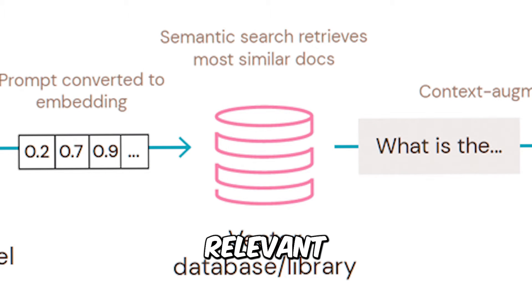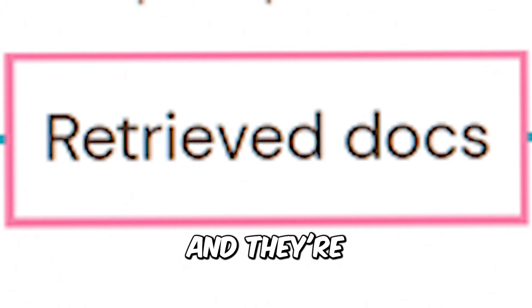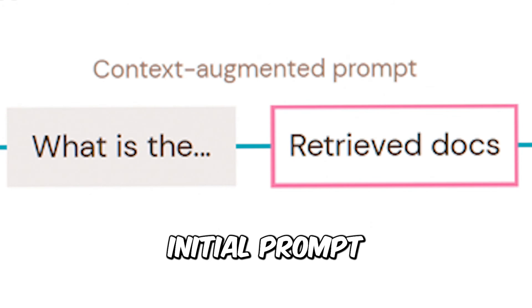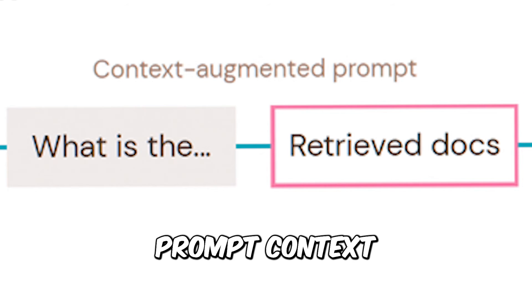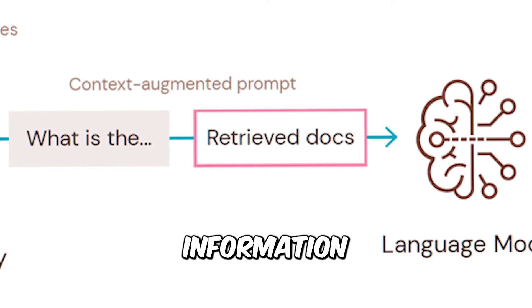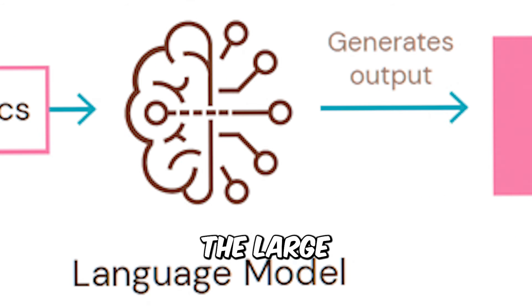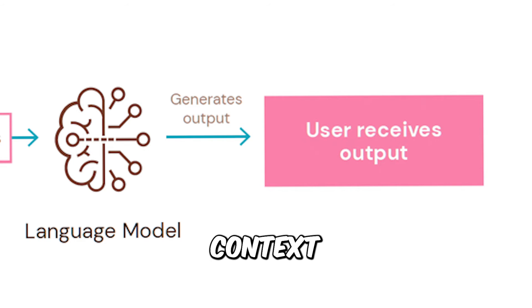The most relevant pieces of information are retrieved from that database and added to the initial prompt. So we end up with a bigger and better prompt context that contains the original query and the retrieved information. This helps the large language model to produce a better response, as it has relevant context around the question.